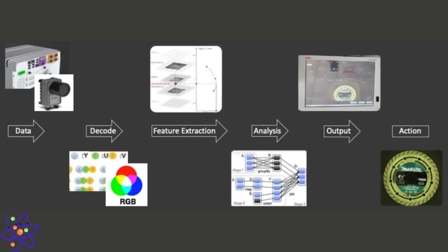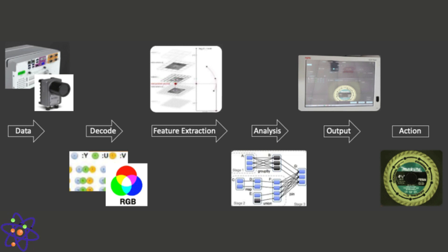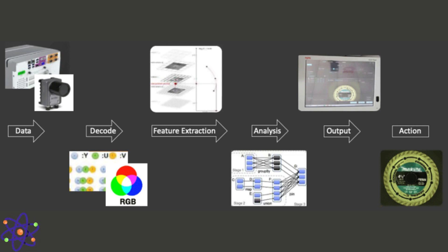Second is feature extraction — the process of identifying and capturing relevant information or patterns from images. Features are distinctive characteristics that help differentiate one object or region from another. Effective feature extraction is critical for subsequent analysis tasks such as object recognition and classification. It involves selecting discriminative information and ignoring irrelevant details, improving the efficiency of computer vision algorithms.